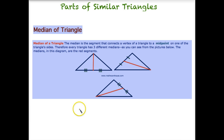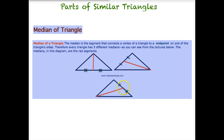Let's refresh on medians. The median of a triangle is the segment that connects the vertex to a midpoint on one of the triangle's sides. As you can see in the second example, it's not necessarily perpendicular to the base. All it has to do is connect to a midpoint of the side, and therefore every triangle has three different medians. The median may or may not be perpendicular to its base, but it must connect to the midpoint of that side.